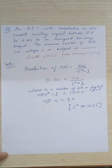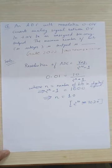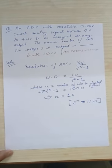If we solve, we will get the number of bits in digital signal equal to 10 because 2 to the power 10 equals 1024.